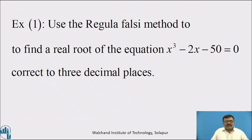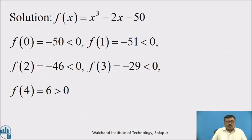Now, let us look at an example. Use the Regula Falsi method to find the real root of the equation x³ − 2x − 5 = 0, correct to three decimal places. Solution: Let f(x) = x³ − 2x − 5.